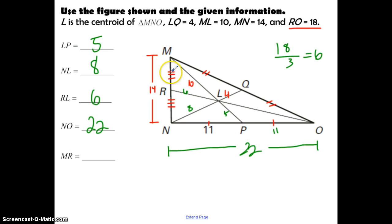MR is going to be this segment. We have MN, the whole thing is 14. If it gets divided into two equal segments, this is going to be 7. So MR is equal to 7.